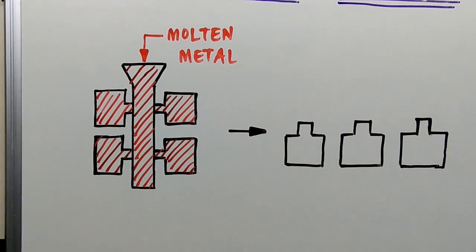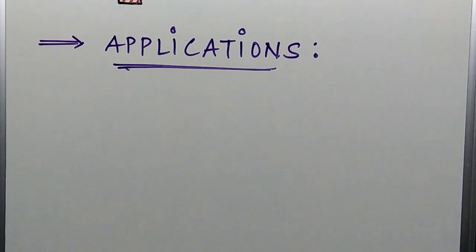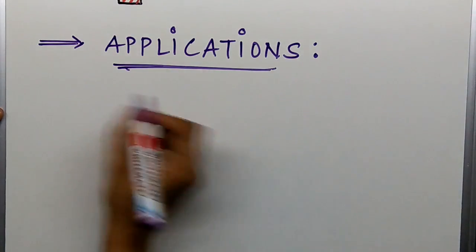So that was all about the investment casting process. Now let's look at the applications of this process. Investment casting is usually used for small jobs and it is used for mass production. All right, so it finds its application in gas turbines.